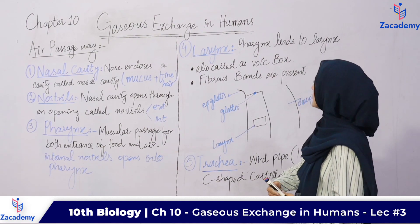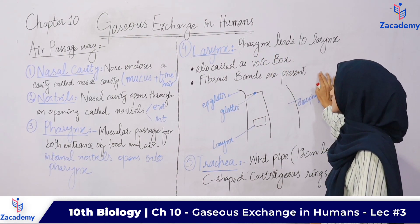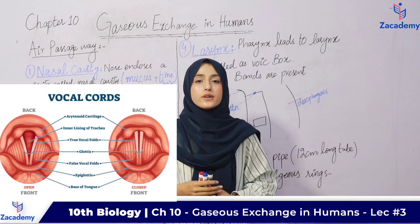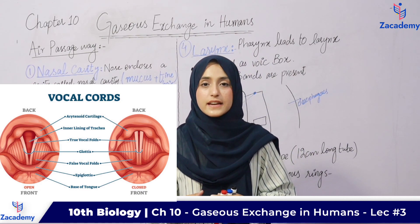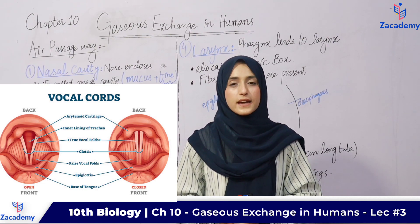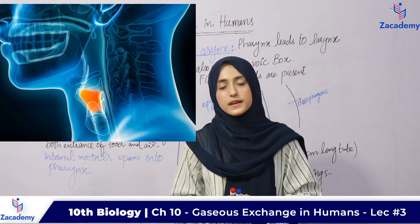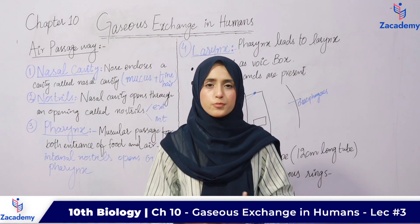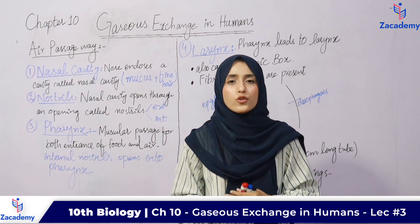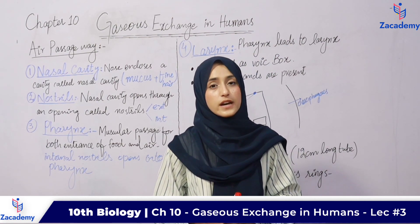Internal nostrils open into the pharynx. Next, we have a structure called the larynx. The larynx is called the voice box. Pharynx projects next into the larynx, where fibrous bands are present in pairs. When air moves, the fibrous bands vibrate and produce sound. The larynx, also called the voice box, is the organ responsible for voice production. It is specific to human beings — humans have the ability to convert sound into speech.